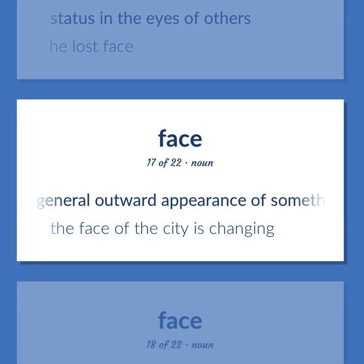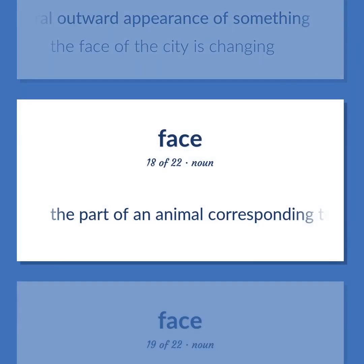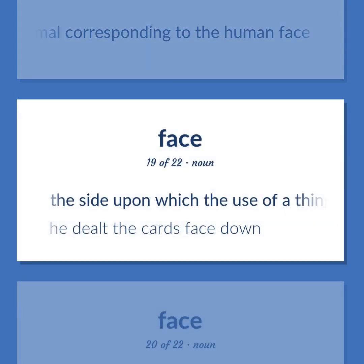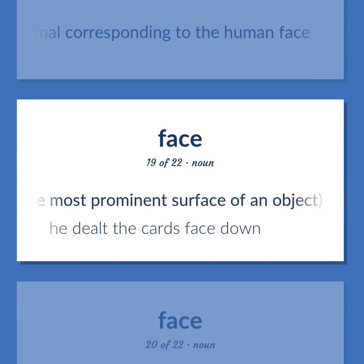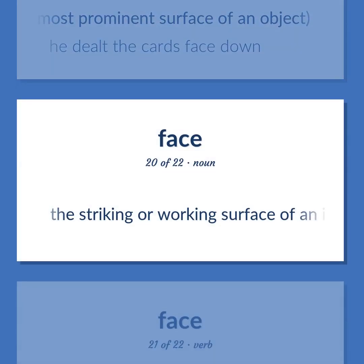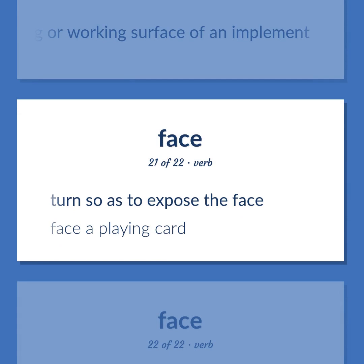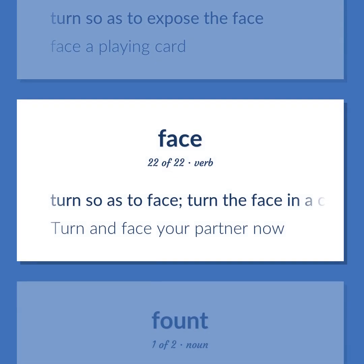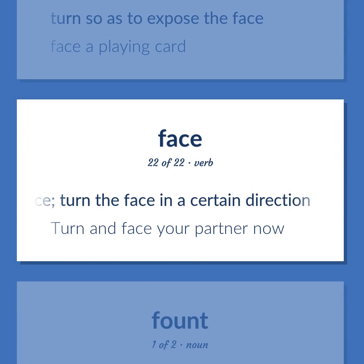The general outward appearance of something — the face of the city is changing. The part of an animal corresponding to the human face. The side upon which the use of a thing depends; usually the most prominent surface of an object — he dealt the cards face down. The striking or working surface of an implement. Turn so as to expose the face — face a playing card. Turn so as to face; turn the face in a certain direction — turn and face your partner now.